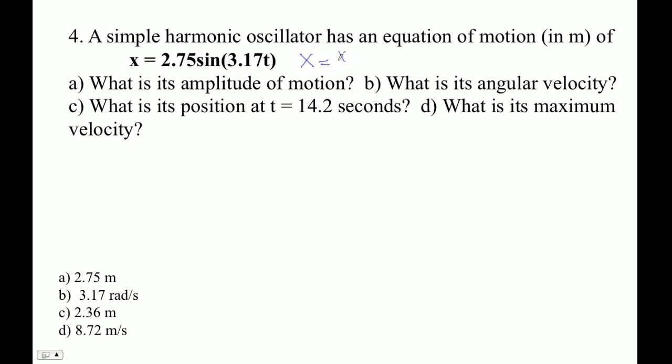x equals x naught sine omega t. So this must be x naught and this must be omega. Part a: amplitude is 2.75 meters, that's our x naught.